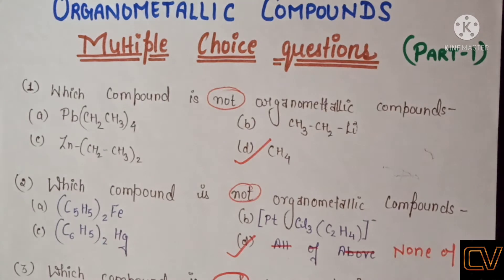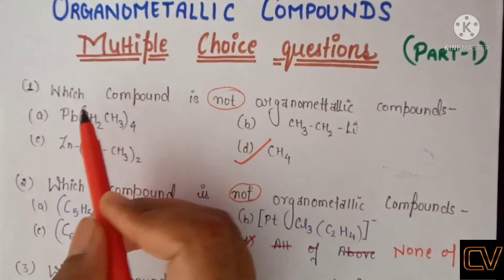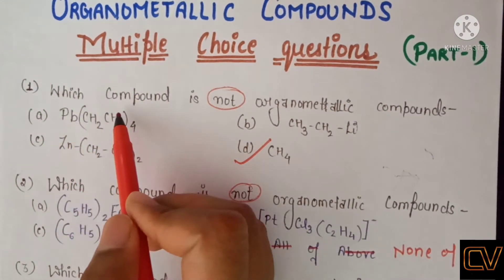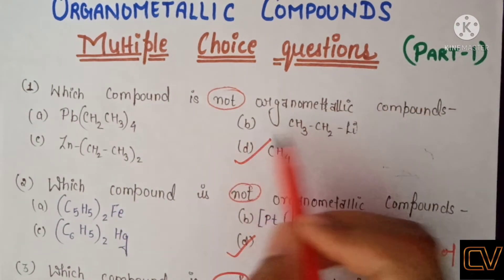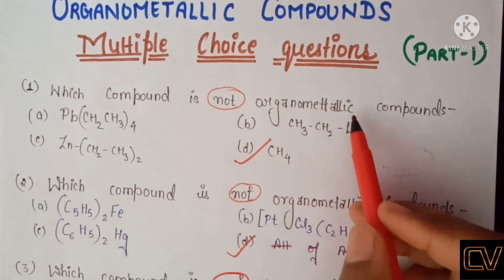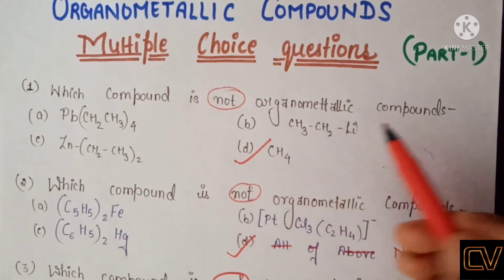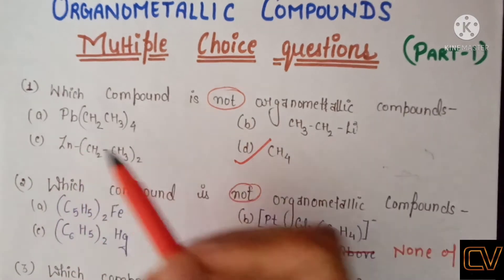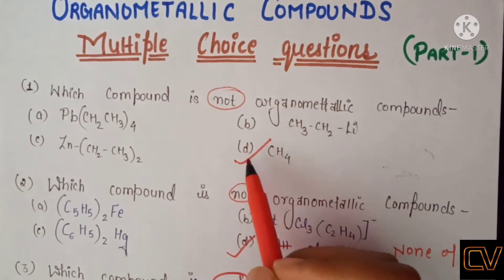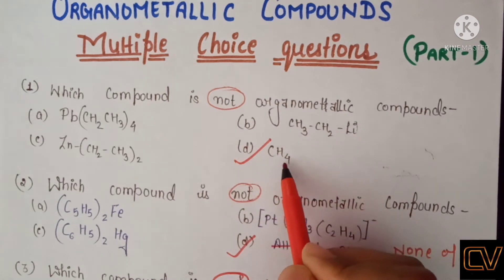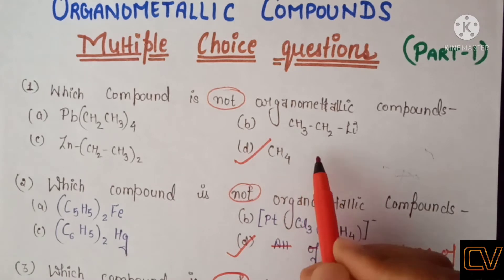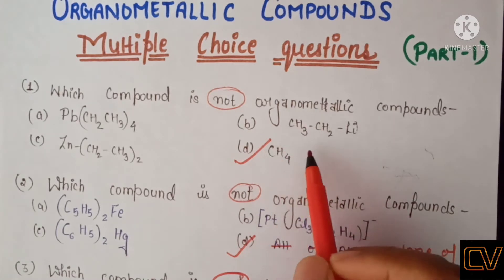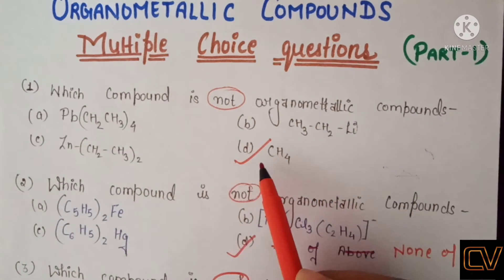Which compound is not an organometallic compound means there will be no metal atom present with an organic group. Option A has lead with an organic group, so it is an organometallic compound. Option B has lithium, a metal with an organic group, so it is also organometallic. Option C has zinc with an organic group attached, so it is also organometallic. Option D is methane, a carbon compound but it has no metal atom attached, so it is NOT an organometallic compound. The correct answer is option D.